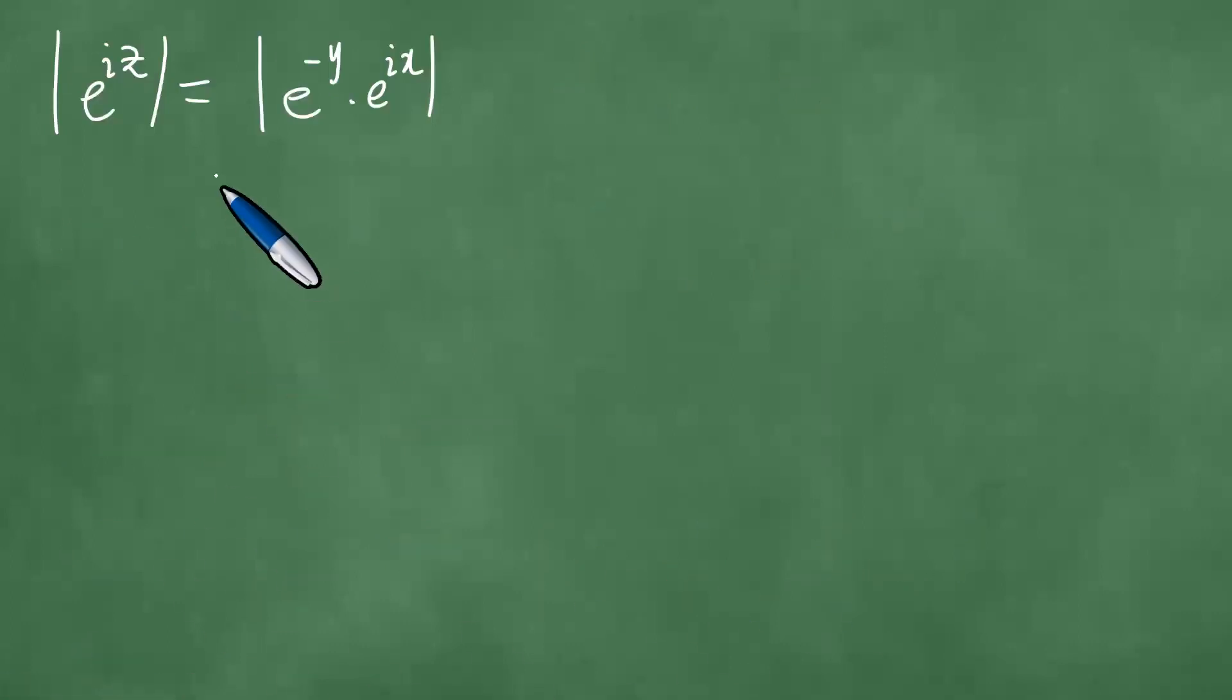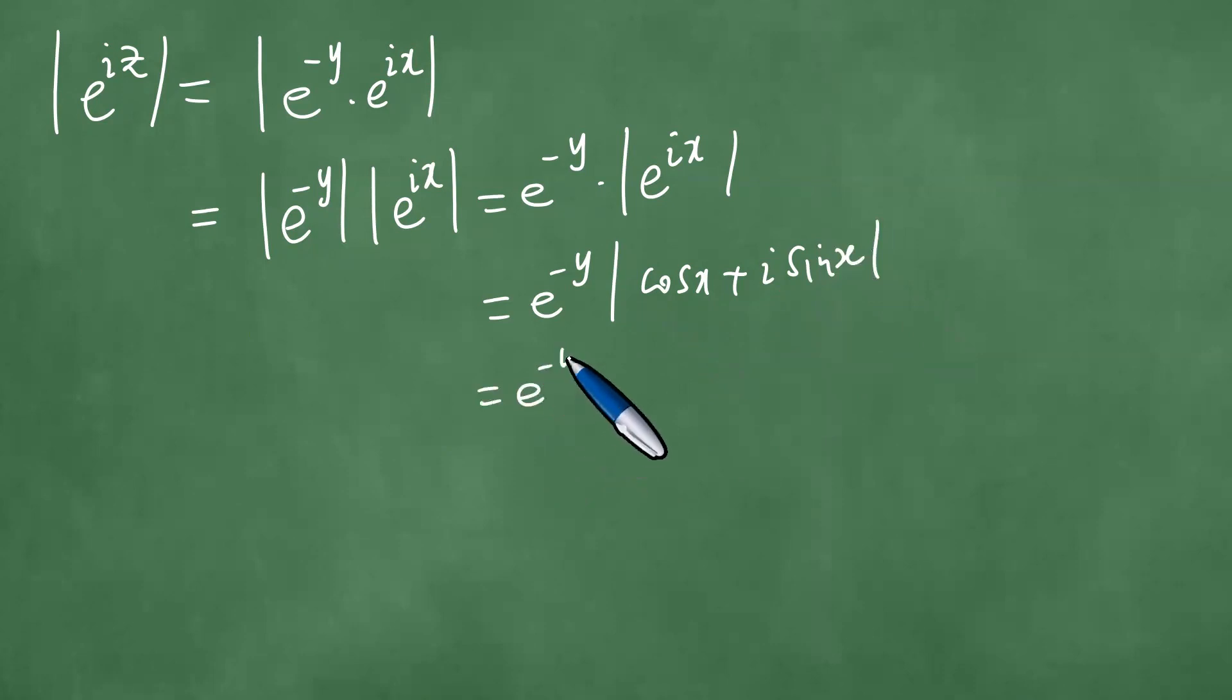Okay, we further expand this and realize that it is e to the minus y times e to the ix. Which means the modulus of e to the minus y times e to the ix. And this here is e to the minus y. And what is this? This is exactly cosine x plus i the trigonometric sine of x.